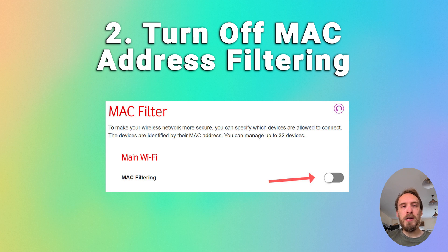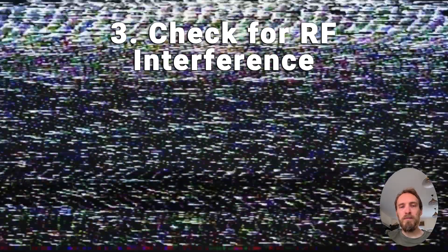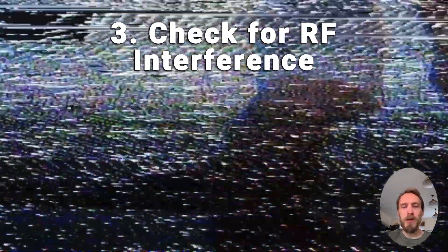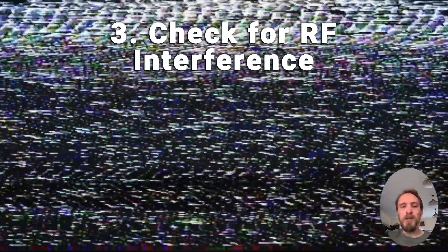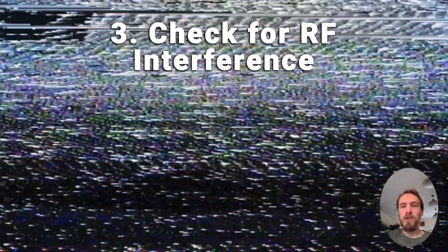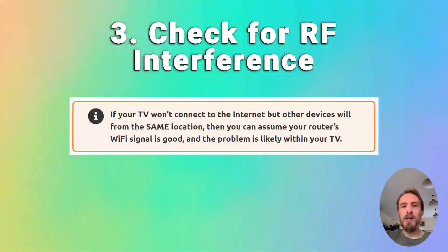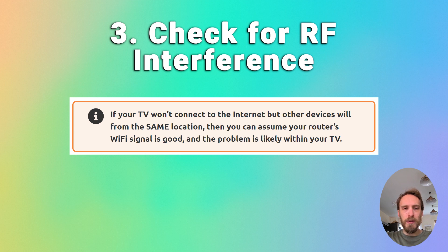If MAC filtering is off, check that you don't have any Wi-Fi interference or too many devices trying to connect to your router. Try putting your phone next to your TV and connecting to the internet through your router from your phone — that can help determine if there's an interference problem. And if you've got a lot of devices connected to your router, try switching a few of them off.